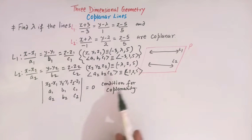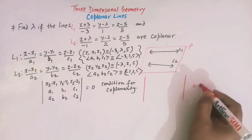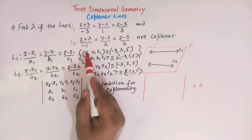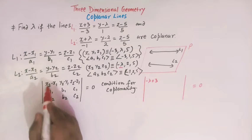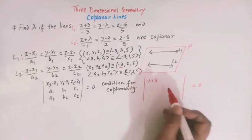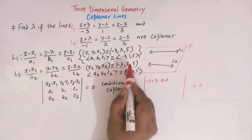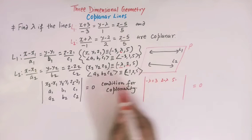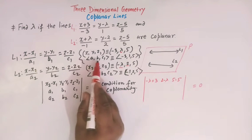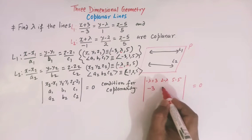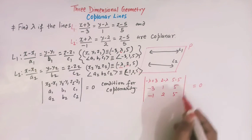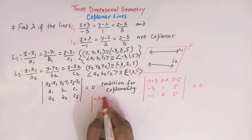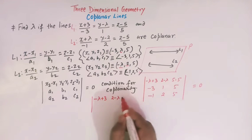Substituting the values into the determinant: X2 - X1 = -λ - (-3) = -λ + 3, Y2 - Y1 = 2 - λ, Z2 - Z1 = 5 - 5 = 0. The second row is A1, B1, C1 = (-3, 1, 5) and the third row is A2, B2, C2 = (-1, 2, 5).